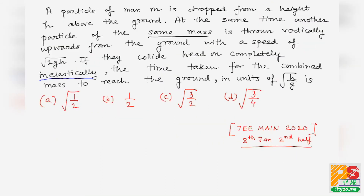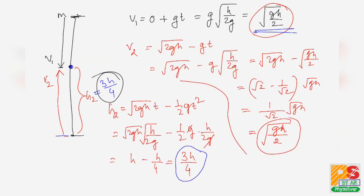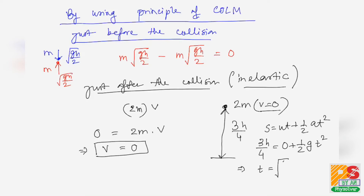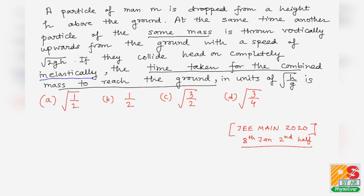Now we find the time taken for the combined mass to reach the ground. Using s = ut + ½at²: s = 3h/4, u = 0, a = g. So 3h/4 = ½g·t², giving t = √(3h/2g) = √(3/2)·√(h/g).